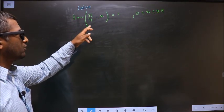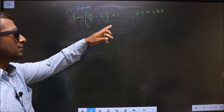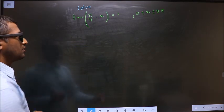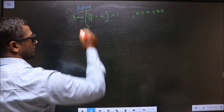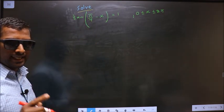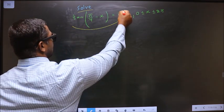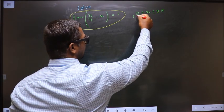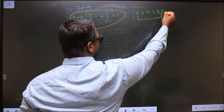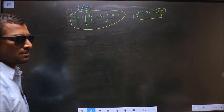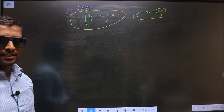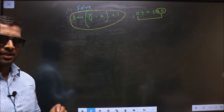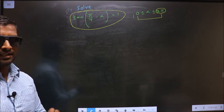Solve tan(π/4 - x) = 1, where x lies in the interval 0 to 2π. Since they told you to find values for x satisfying this equation and the interval is given as 0 to 2π, you should get the answer in radians. Put your calculator in radians mode — I repeat, put your calculator in radians mode.